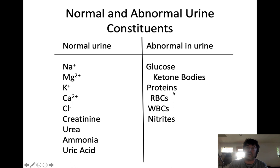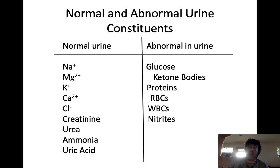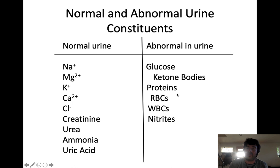Proteins should never be found in urine — they should be too big to get across the glomerular capillary wall and should remain in the blood. If proteins are getting filtered into the urine, a really common cause is that blood pressure is too high — hypertension. So finding proteins in the urine can reflect hypertension or bacterial infections in the kidney, but focus on hypertension for this exam.